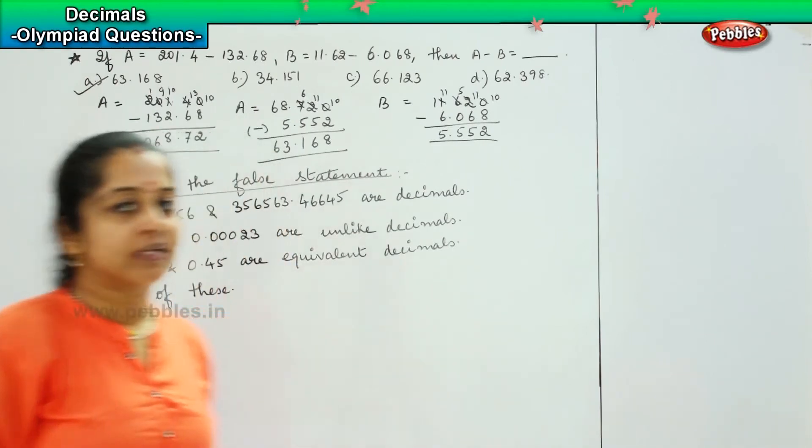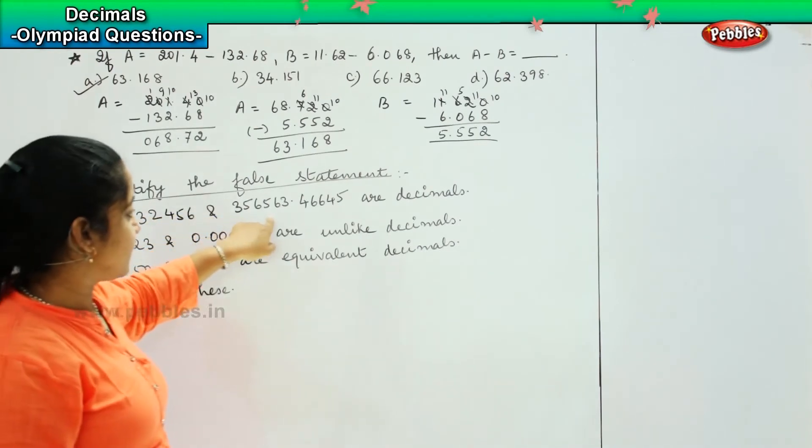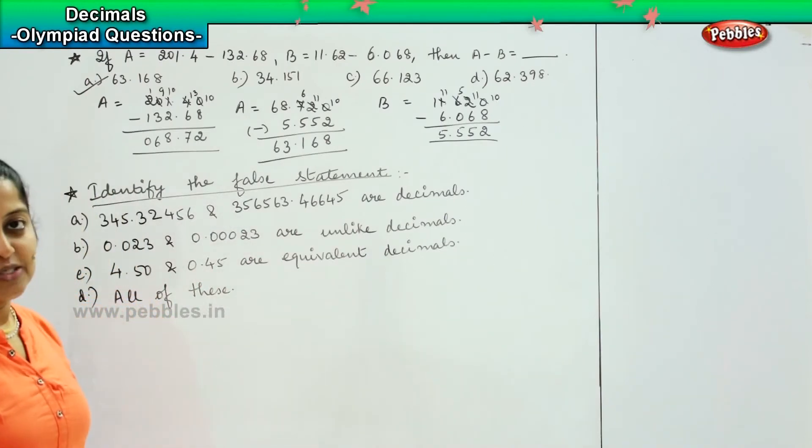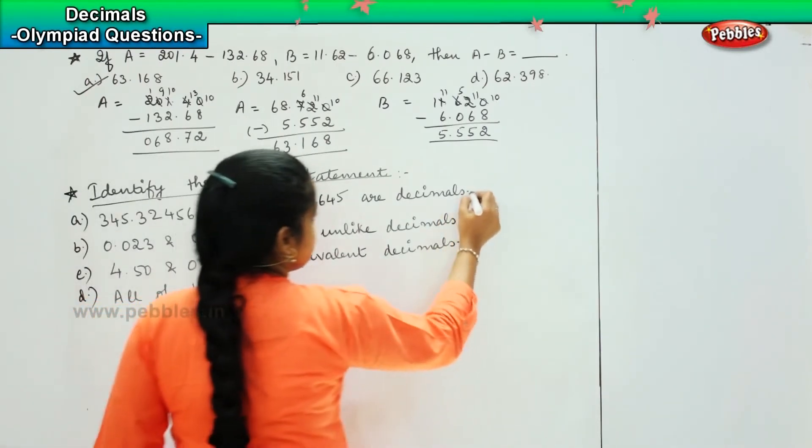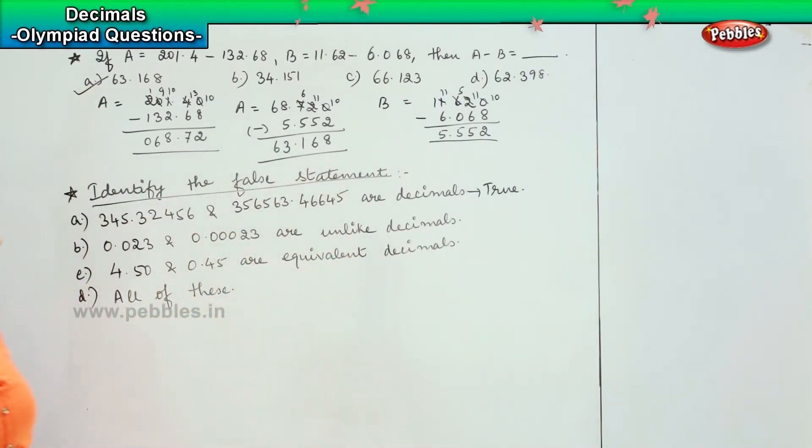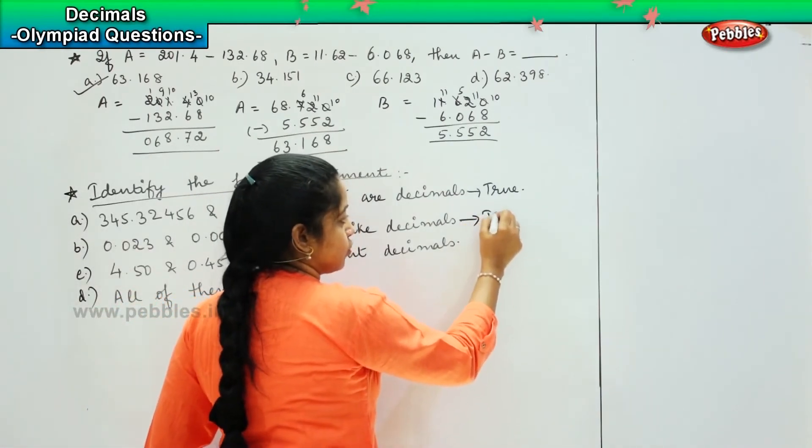So you have to identify which among the given options are false. 345.32456 and 356563.46645 are decimals. Yes, though the value is not same, but then both of them are decimals. So this statement is true. Next one, 0.023 and 0.023 are unlike decimals. Unlike means different decimals. This is also true.